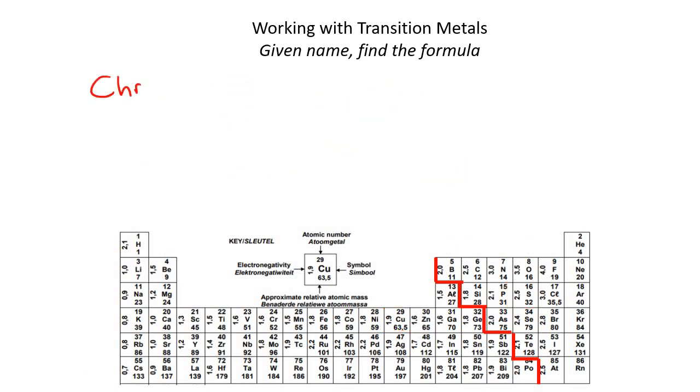Our next example will be chromium. So chromium is Cr over there. And so that's a transition metal, so we're going to give it a Roman numeral of 3, for example. And then let's combine that with oxygen, so we'll say chromium oxide.